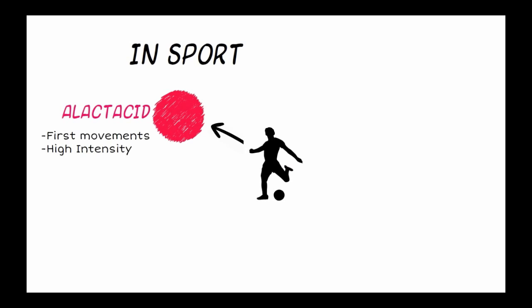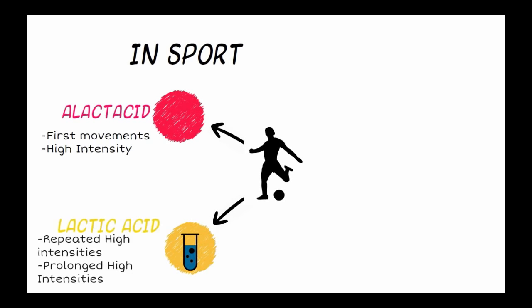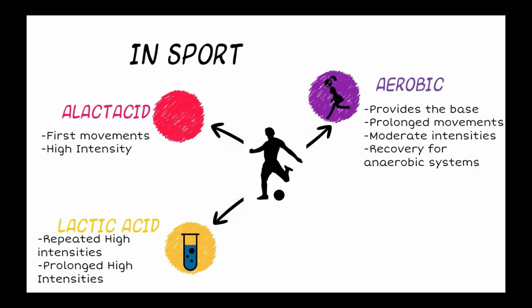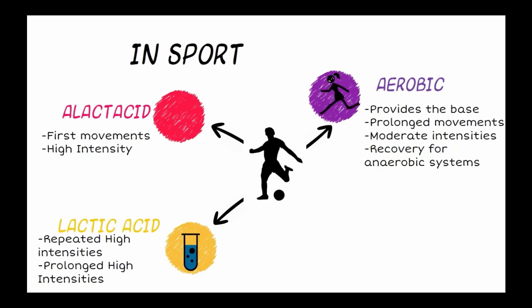In sport, the alactic acid energy system is used for first movements and movements of high intensity. The lactic acid system is used for repeated high intensities and prolonged high intensities. The aerobic energy system provides the base for all aerobic sports, is used for prolonged movements and moderate intensities, and is also used to allow the anaerobic energy systems time to recover.